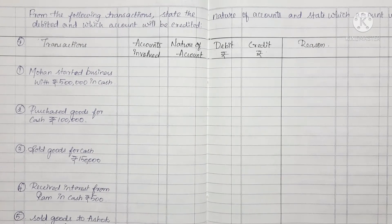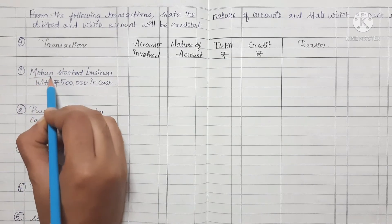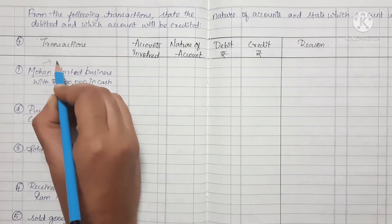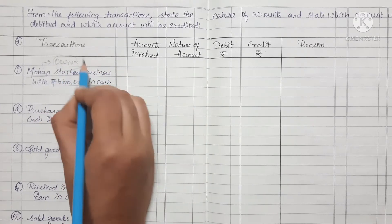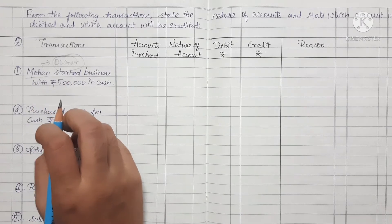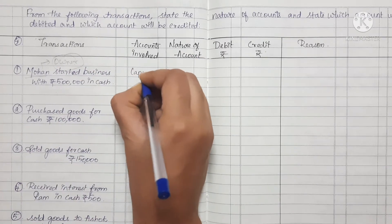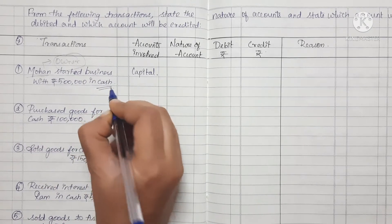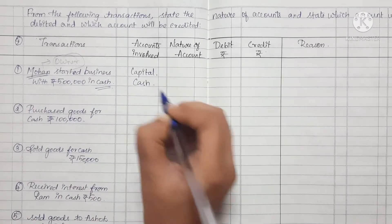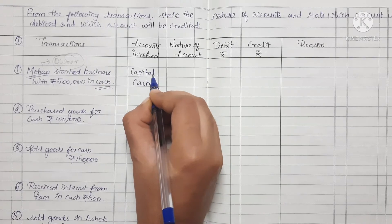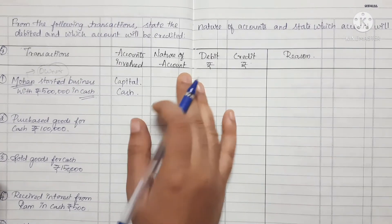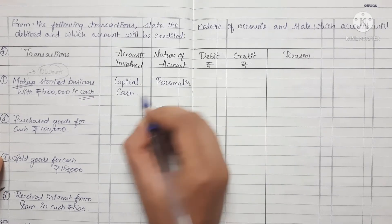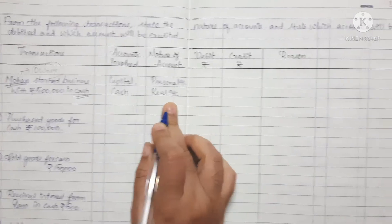First, identify the person's name. Mohan is the one who started the business — he is the owner. So we will open a capital account for the owner. Next, cash is involved, so we create a cash entry. Capital is a personal account — specifically a natural personal account. Cash is a real account.